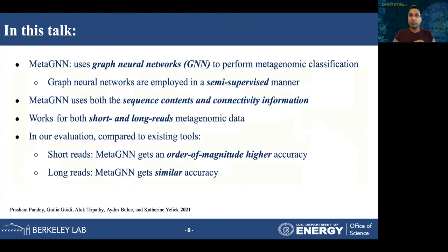In this talk, we introduce a tool called MetaGNN, which is based on graph neural networks to perform the metagenomic classification task. In MetaGNN, we use a graph neural network in a transductive setting in which we know the ground truth of a small portion of the dataset, and our goal is to classify the rest of the reads into which species they're coming from — so we use it in a semi-supervised manner. MetaGNN shows how we can use both the contents of the read and the connectivity information between reads to perform classification. It works well for both short and long read datasets.